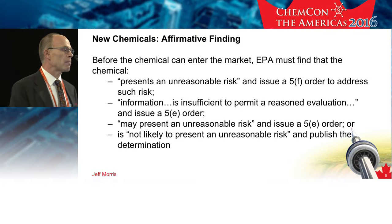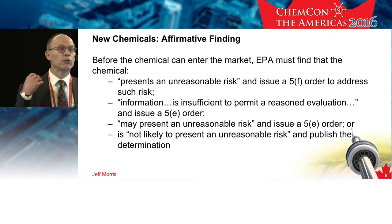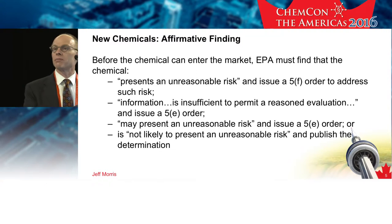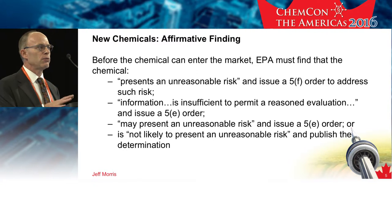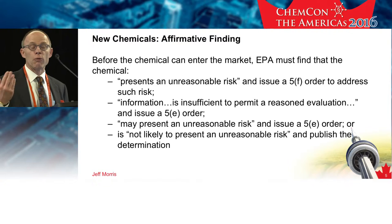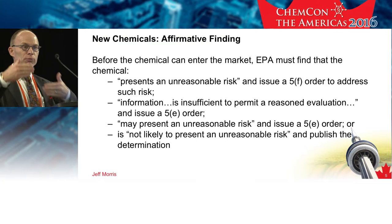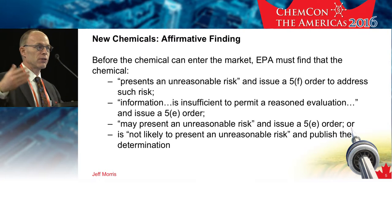That's not entirely new. What is new is the second determination: where information is insufficient to make a finding, we do a reasoned evaluation of the risk of the substance. We would then issue an order under Section 5E, basically stating that if a company wants to commercialize this substance, we're going to need additional information prior to commercialization. The third is a finding of 'may present unreasonable risk.' We made this finding previously. What's changed under the new law is that we would make a determination for known and reasonably foreseen uses. The known uses are what are listed in the pre-manufacture notice — a company states they intend to commercialize this substance for these uses. Those are the known uses.